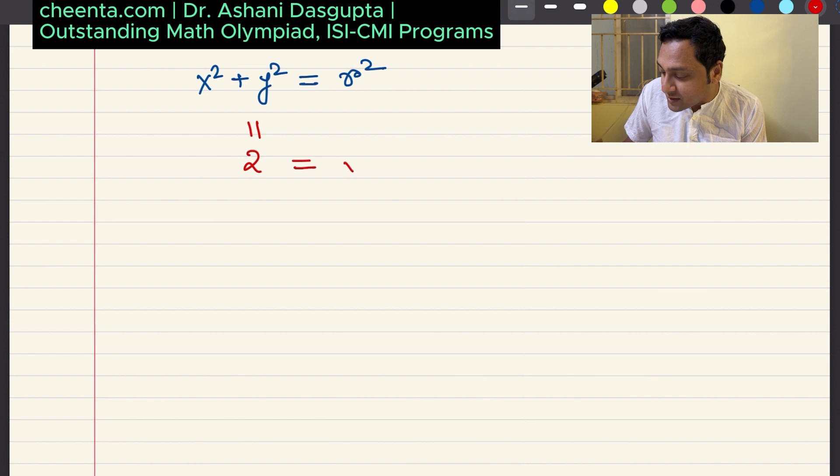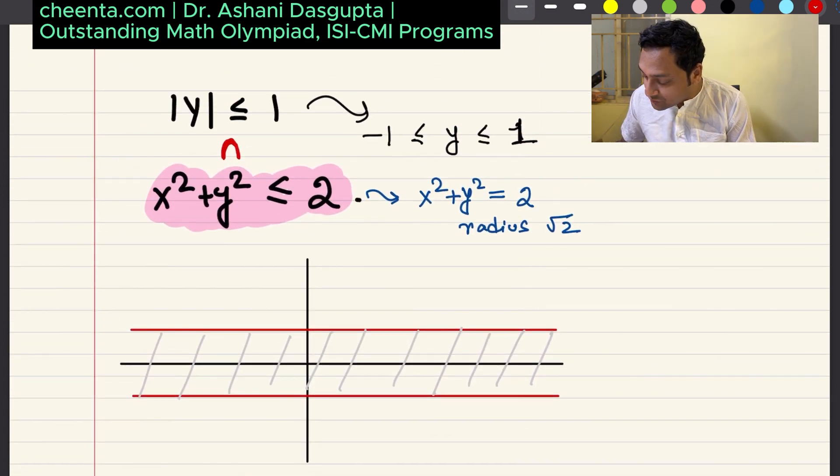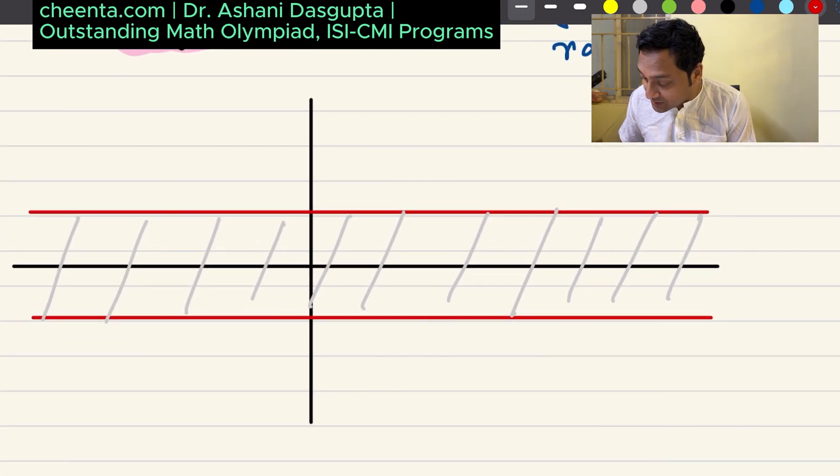If you remember, equation of a circle is, the simplest form of it is x squared plus y squared equal to r squared, where r is the radius. In this particular case, it's given that this is equal to 2. So you can write 2 as square root of 2 whole square, and you'll get the given form. So how do I draw this? Well, it has to be a circle with center 0, 0, and radius square root of 2.